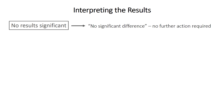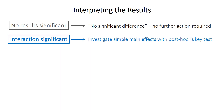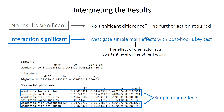If none are statistically significant, you can only say there's no significant difference, and no further action is required. If the interaction is significant, it's difficult to interpret the regular main effects because the effect of one factor depends on the value of the other. Instead, you can investigate the simple main effects — the effect that one factor has at a constant level of the other factor. In the Tukey test output, these are shown in a list, for example the difference between wood chips and soil at a constant low phosphate level.